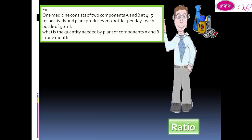Example: one medicine consists of two components A and B at 4 to 5. A plant produces 200 bottles per day, each bottle of 90 milliliters. What is the quantity needed by the plant of components A and B in one month?